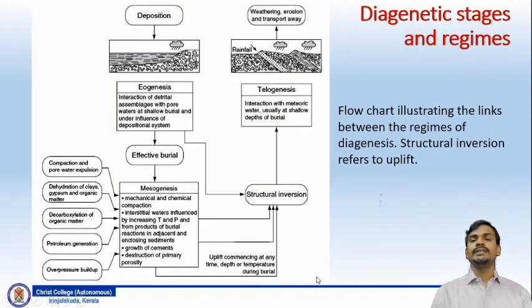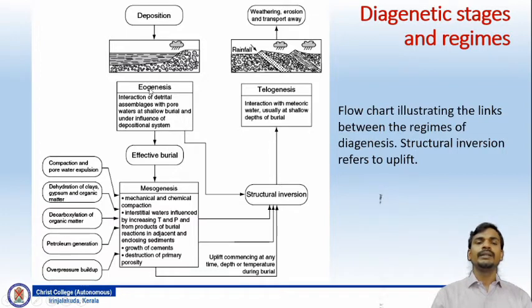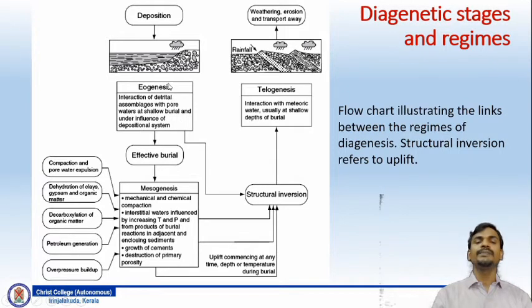This diagram is a flowchart illustrating the links between regimes of diagenesis. It covers various regimes of diagenesis explained so far and the role of structural inversion, which refers to the upliftment process that causes telogenesis. On the left-hand side, deposition happens in a basin, and eogenesis occurs due to the interaction of detrital assemblages with pore waters at shallow burial under the influence of the depositional system. These sediments then move into the mesogenetic regime through effective burial and increasing overburden thickness.